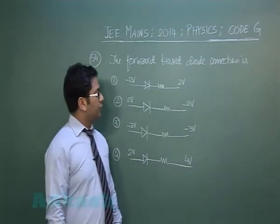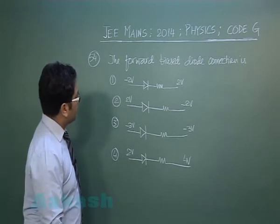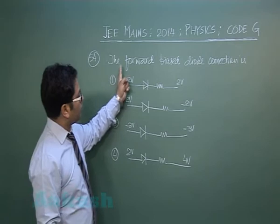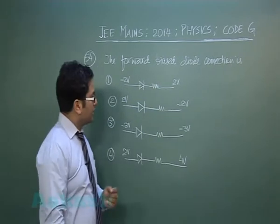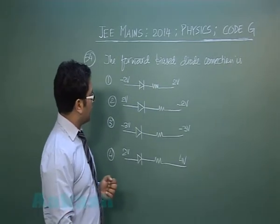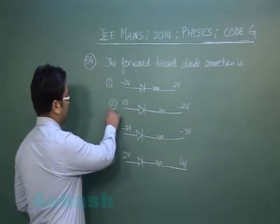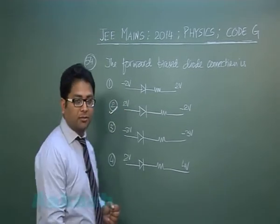Question number 54 is from semiconductors. Out of all these four options, we need to choose the forward biased diode connection. That's very simple - the potential of P has to be higher than that of N, and that straightaway goes to option number 2.